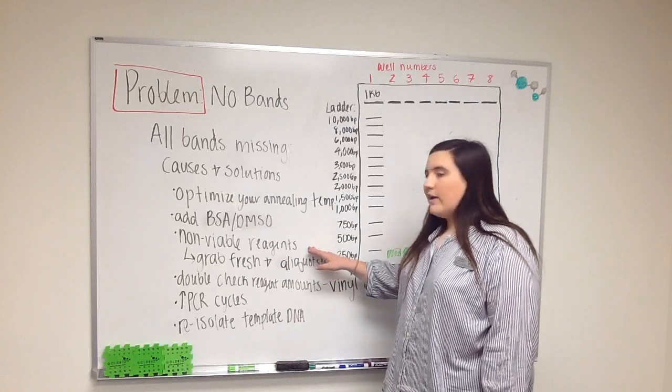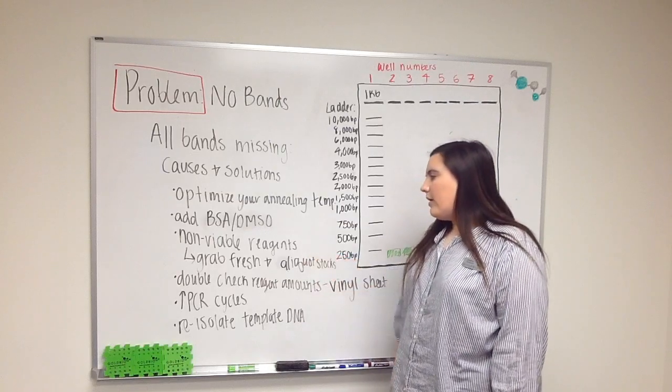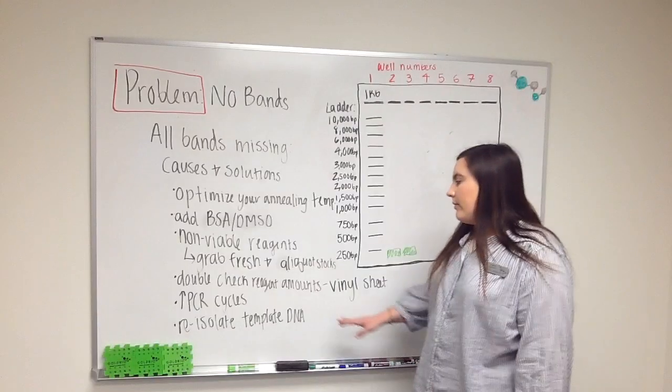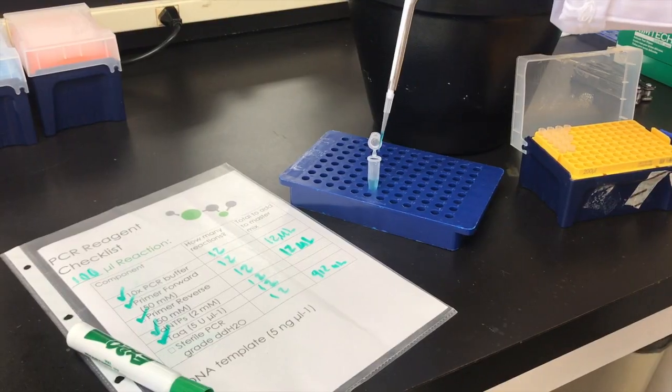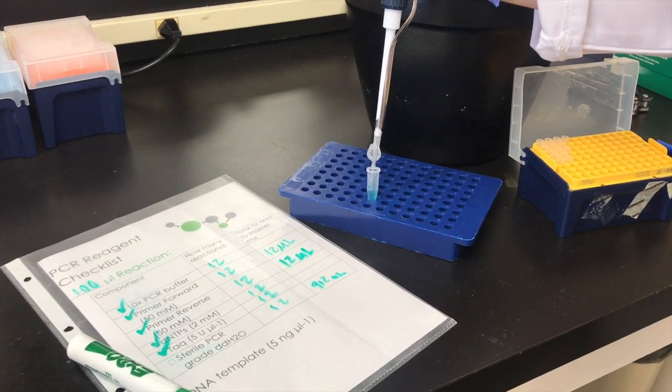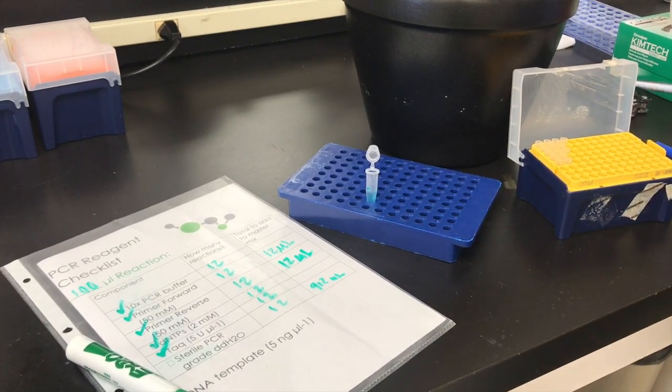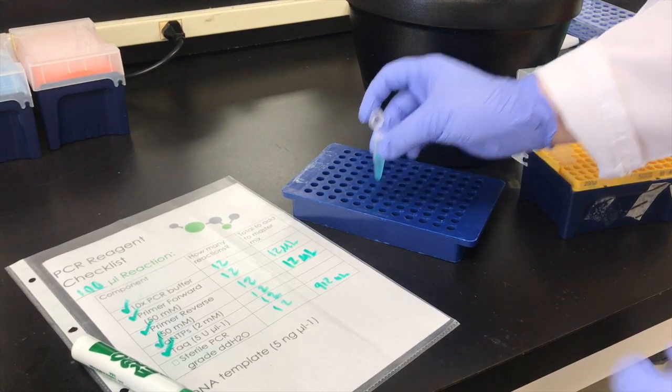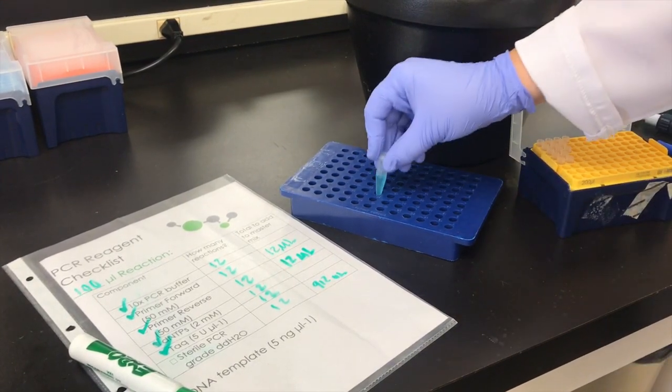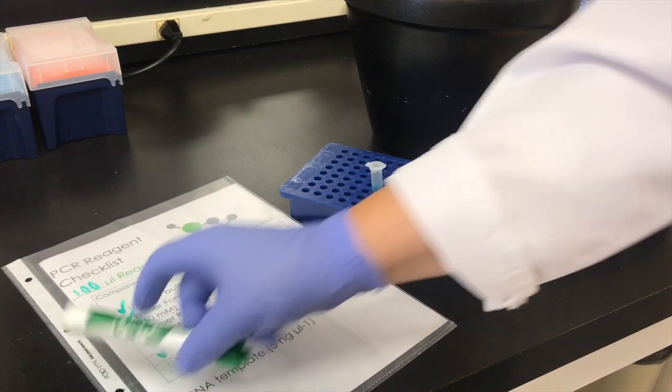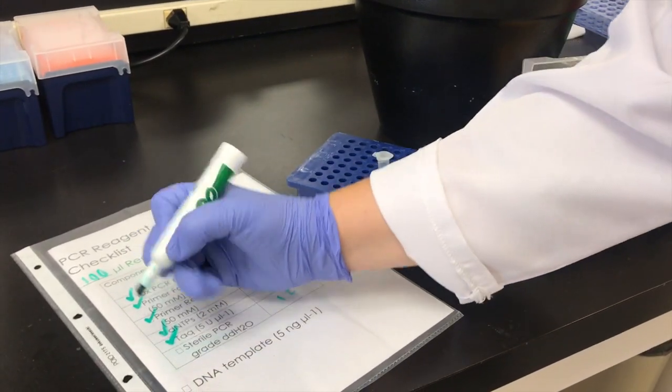You may also have reagents that aren't viable. Go ahead and grab fresh reagents and try it again. Double check your reagent amount with your protocol. Try typing out your protocol and leaving it on your bench in a vinyl sleeve. You can then use a dry erase marker to check off the reagents as you add them and erase them after you're done. That way you're consistent with the amounts you're adding each time and making sure that you added all the reagents correctly.